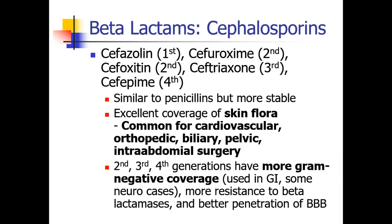There are other beta-lactams besides penicillin. The next, and the ones you most commonly administer, are cephalosporins. Cephalosporins come in a number of different generations, and there are really dozens of different cephalosporins. Cefazolin, or Ancef or Kefzol, is first generation. Cefuroxime is second generation. Cefoxitin is also second generation. Ceftriaxone is third generation, and cefepime is fourth generation.